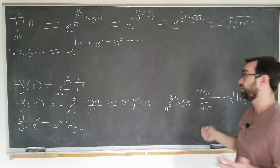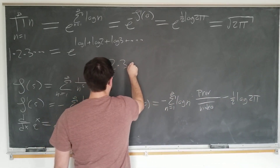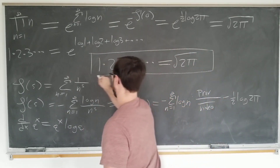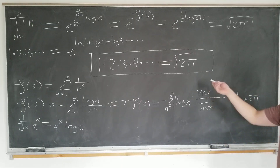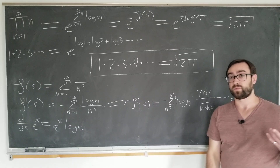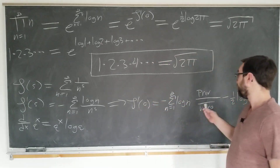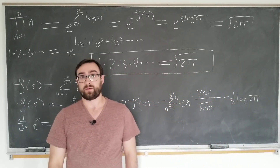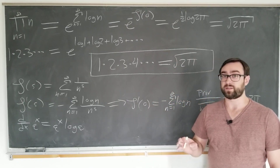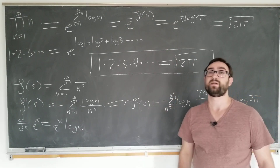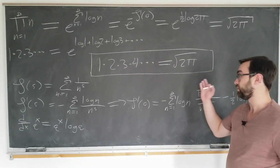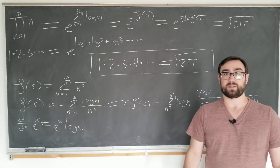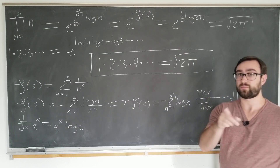This says that 1 times 2 times 3 times 4 et cetera is equal to the square root of 2π. If you want to confound your math professors and amuse your friends, write this formula anywhere you can find it. Actually evaluating zeta prime of zero requires specialized knowledge — specifically series expansions, the digamma function, the gamma function, and polynomial long division.